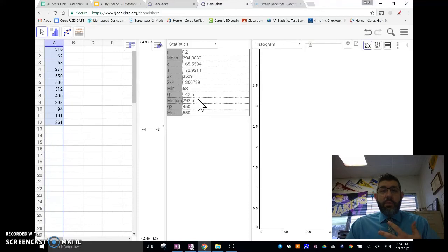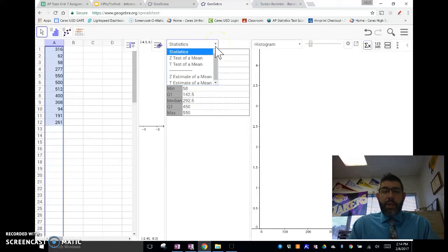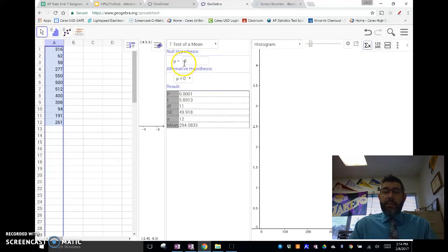However, this will actually do it for us quicker. So, if we click on this where it says statistics, and we scroll down, and we see that we have a z-test of a mean, a t-test of a mean, and an estimate, and a t-estimate. Now, our n is smaller than 30, so we don't want to use z. We're going to use t since we're using a t-test. So, if we wanted to do a t-test, we'd click here, t-test. And we'd say, okay,